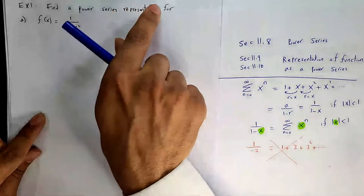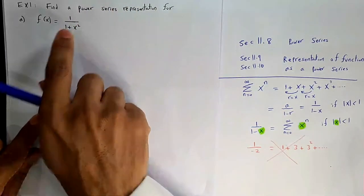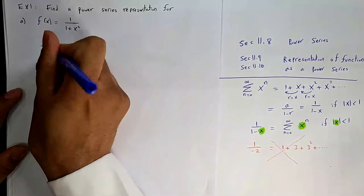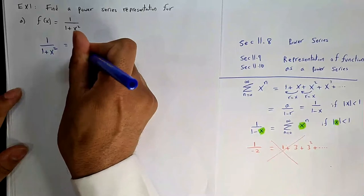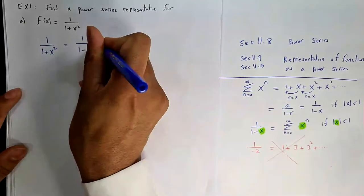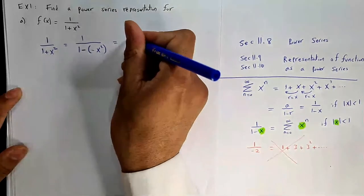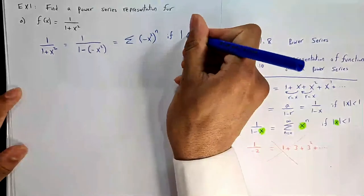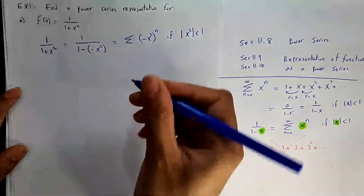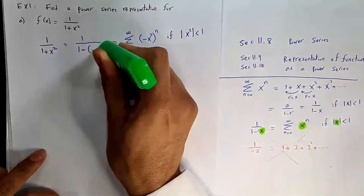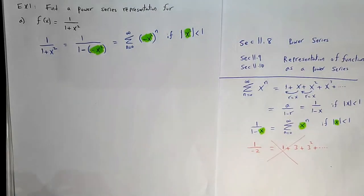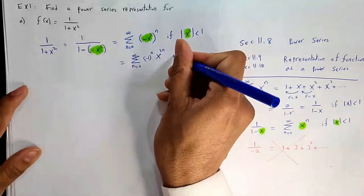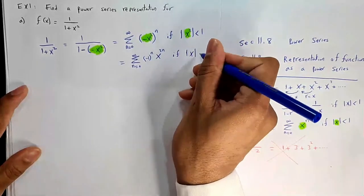Example 1a: Find the power series representation for f(x) = 1/(1+x²). We need to match the form 1/(1 minus something). Write it as 1/(1-(-x²)). Then plug -x² into the series: Σ(-x²)ⁿ = Σ(-1)ⁿ x²ⁿ, for n = 0 to ∞. This is valid when |(-x²)| < 1. Since we take absolute value, the minus disappears.